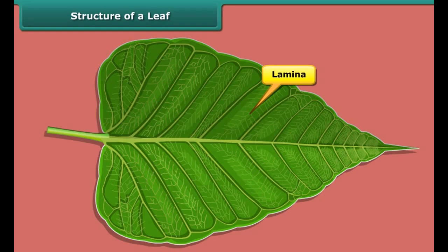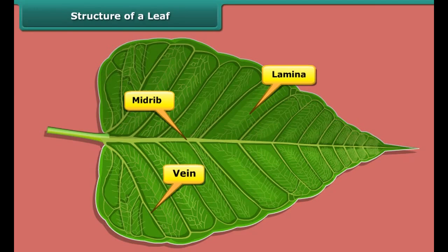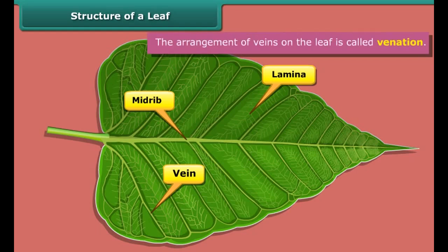The lamina is green in color. The thick line present in the middle of a leaf is called the midrib. The thin lines branching from the midrib are the veins.